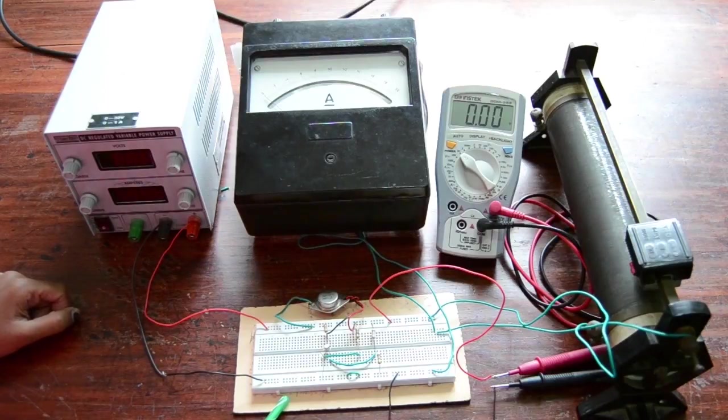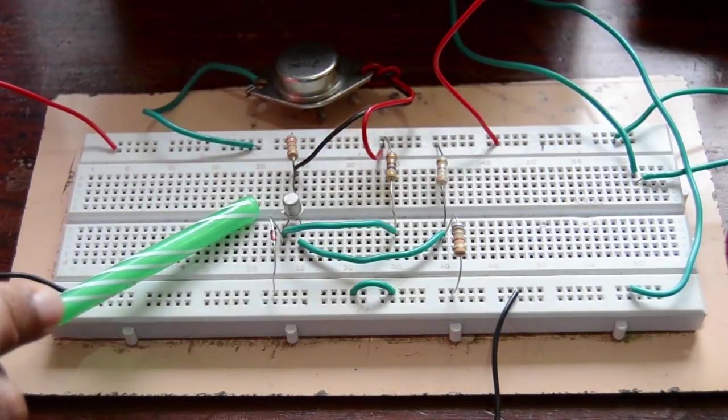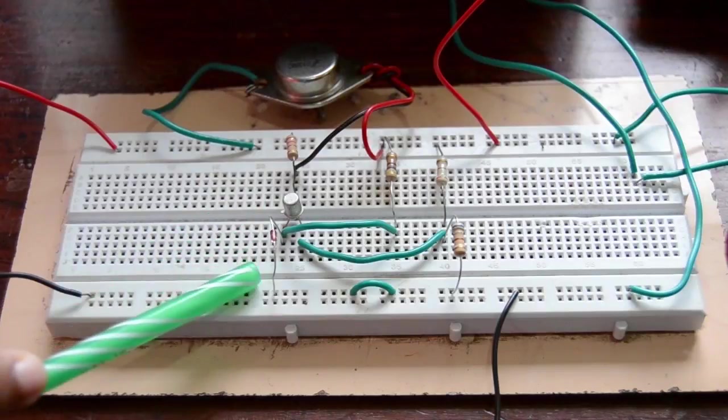This is the circuit that we have set up. This is the high-power transistor 2N3055 and this is the low-power transistor which acts as an error amplifier, and this is the Zener diode.